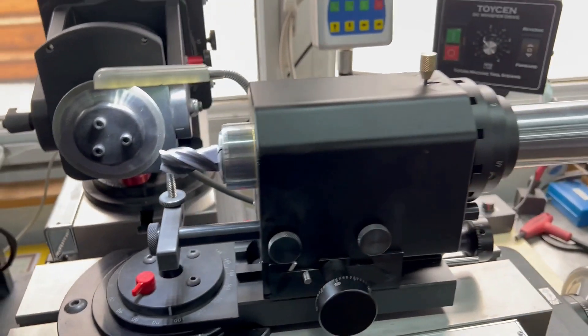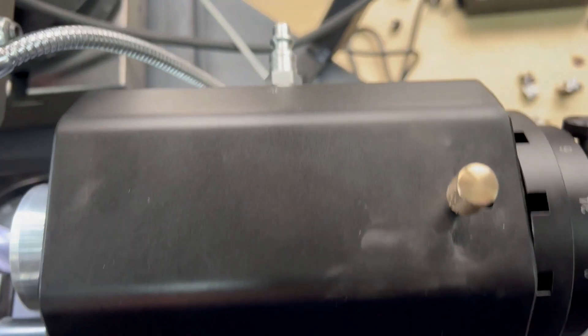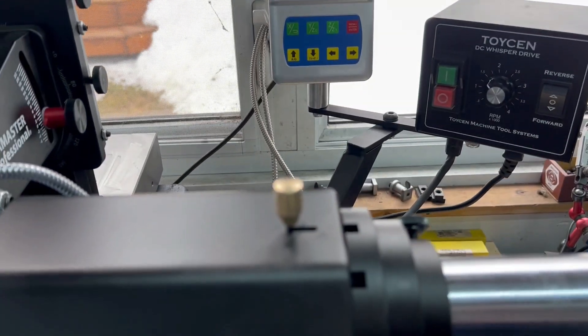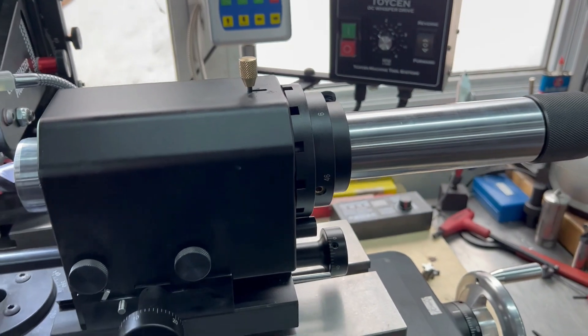If you have a conventional end mill, the flutes are symmetrically located and you can use the indexing collar. When you have a variable pitch tool, most of the companies that make variable pitch tools make them differently.